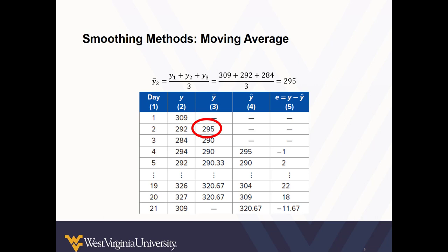Here we calculate the three period moving average. We sum the number of calls from days one, two, and three, and then divide by three, our number of observations, for an average of 295.